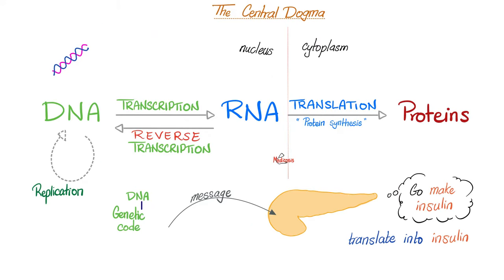When you make another copy of DNA, it's called DNA replication — DNA synthesis, which happens in the S phase. DNA to RNA is transcription; if you go the other way, it's reverse transcription. And if RNA becomes protein, this is translation, also known as protein synthesis.